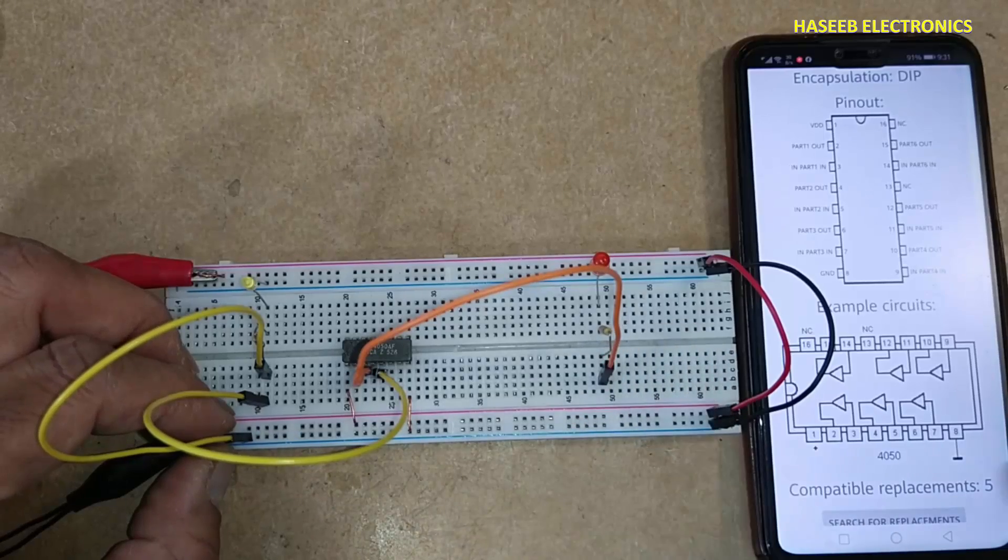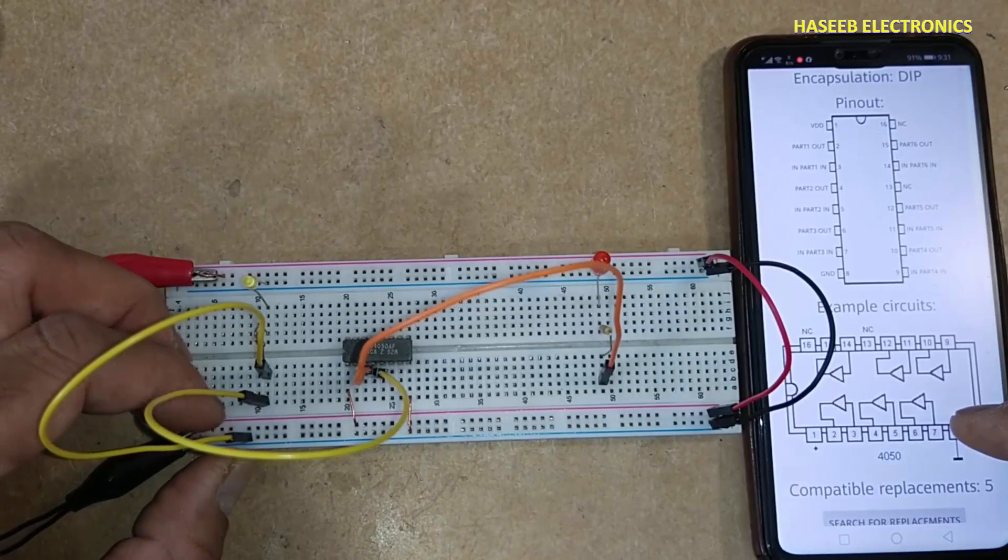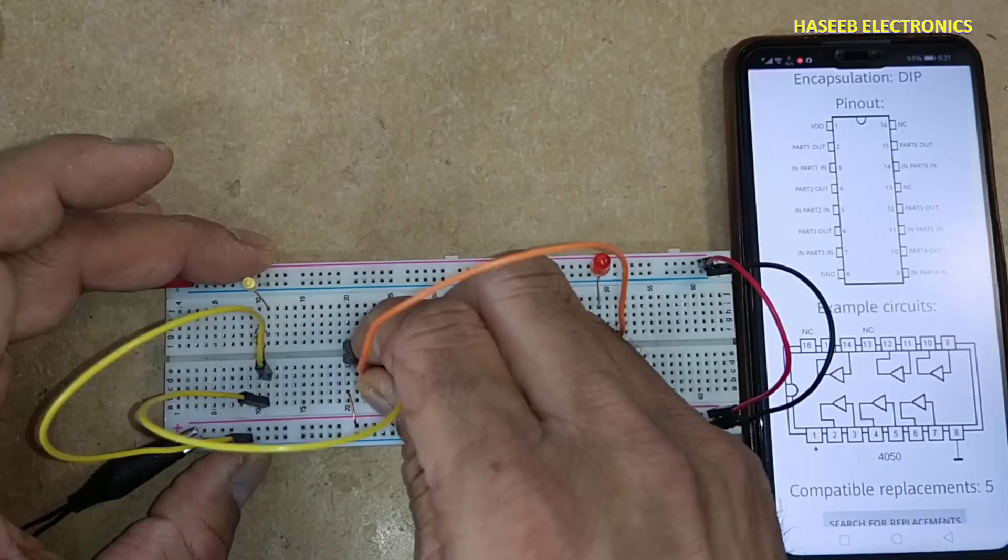Input low, output low. Third buffer, pin number 6 output, pin 7 input.